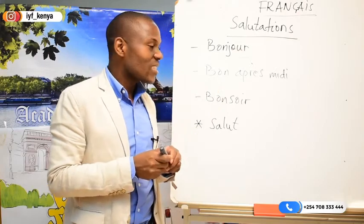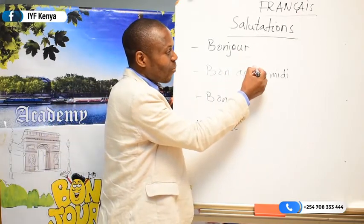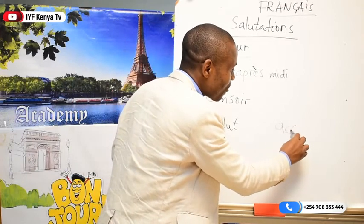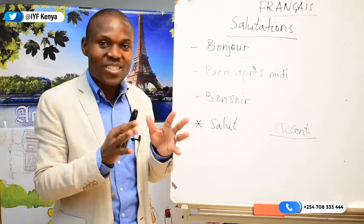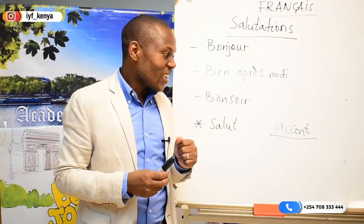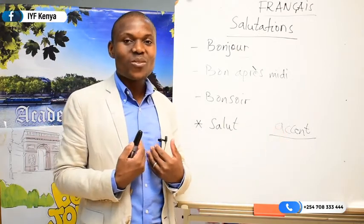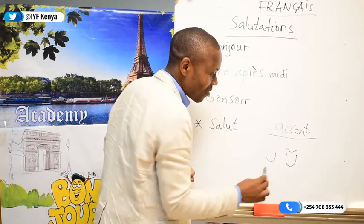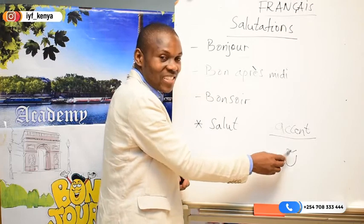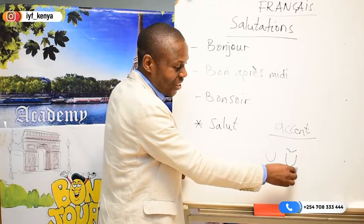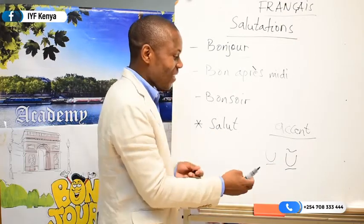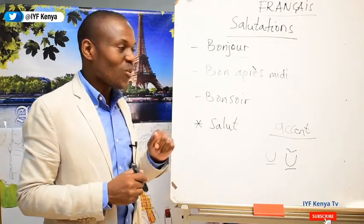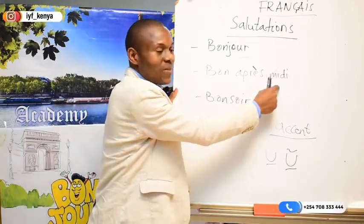We also have bon après-midi, written like that. You will notice there is something on top of the letter — it's called an accent. In French, we have what we call accent. Even in some African languages, like Kikuyu, they also have something like this — where a letter with an accent sounds different from the same letter without one. So in French we also have accent, and you must write it as shown on this whiteboard.